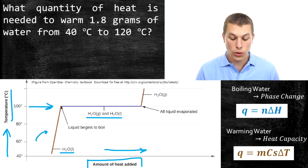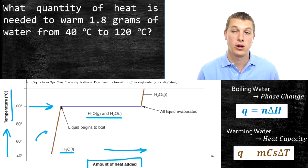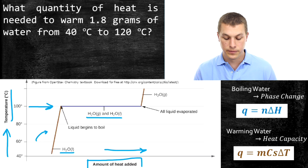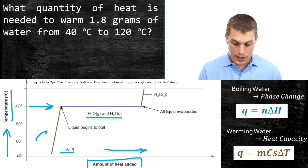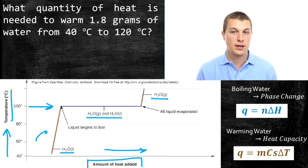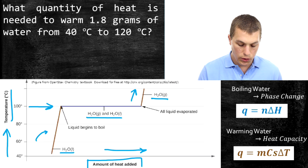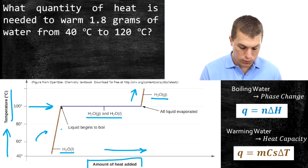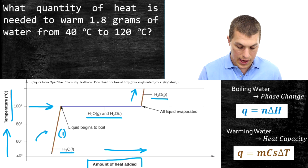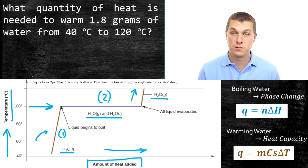During a phase change, temperature is constant — that's a very important principle. When we're turning liquid into gas, all the energy is being poured into those water molecules to pull them apart; none of the energy goes into heating the water anymore. Eventually all the water boils, and we have a mixture of gas and liquid while it's boiling. But once all that gas is above your stove, you just have gas, and you can continue to heat it. So once the phase change is done, adding more heat increases the temperature again.